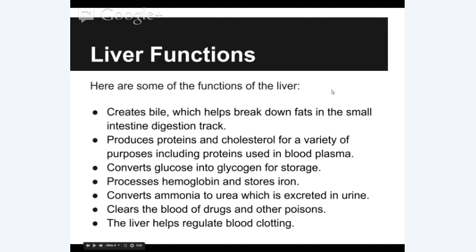Here is a breakdown of the different functions of the liver. It breaks down fats in the small intestine via bile. It also produces proteins and cholesterol for a variety of purposes, including proteins used in blood plasma. It converts glucose into glycogen for storage. It processes hemoglobin and stores iron. It converts ammonia into urea, breaking down harmful chemicals. It clears the blood of drugs and other poisons. And it helps regulate blood clotting. The liver is responsible for over 500 known functions, making it an incredibly important asset to our bodies. We could not live without the liver.